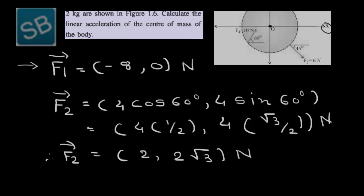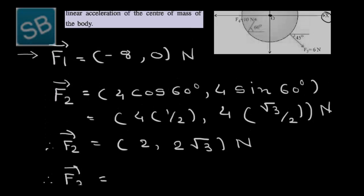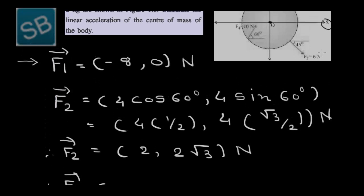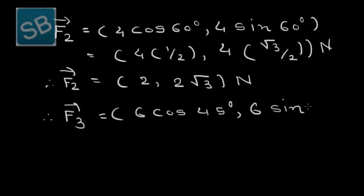The third force F3 has a magnitude of 6 Newton at an angle of 45 degrees. We write the X component as 6 cos 45° and the Y component as 6 sin 45°. Since both cos and sin have the same values at 45 degrees, we proceed to determine the signs based on the direction of the force.